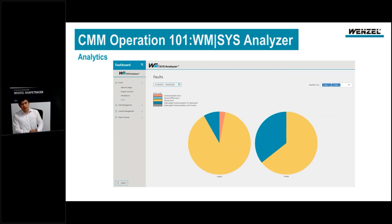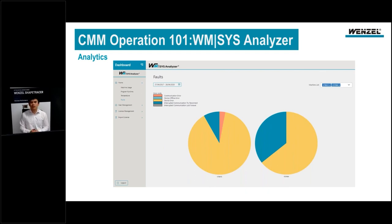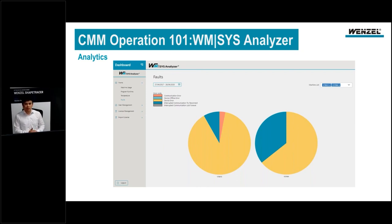You can also check the frequency and number of errors and what kind of error each one is. With this information you can take further steps to correct errors and improve your process. In the future, it is planned that the analytics tool will warn you automatically when a machine repair is required, and it is also planned that it will display whether your measurements are within or outside tolerance.